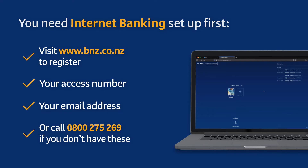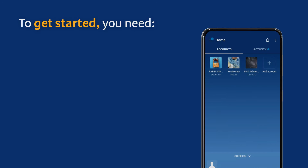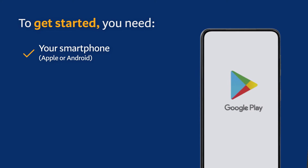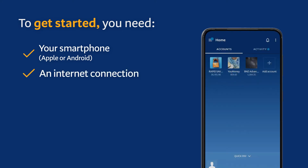Just call us on 0800 275 269. Once you're set up with internet banking, you're nearly ready to use the app. First, you need your mobile phone. This needs to be a smartphone which has either Apple or Android software. If you have an iPhone, you'll be using Apple, and if you have any other type of phone, you'll be using Android. Make sure your phone is connected to the internet or has data.